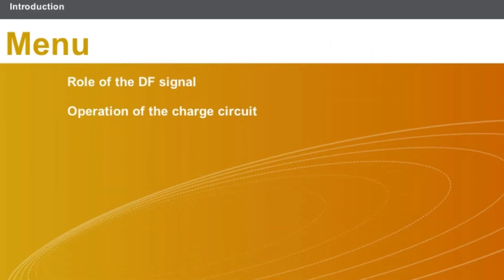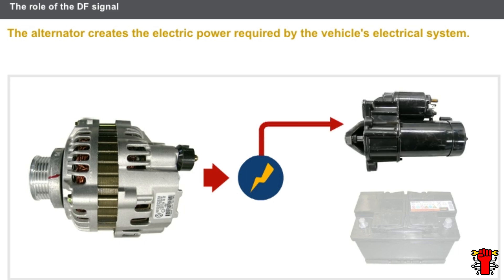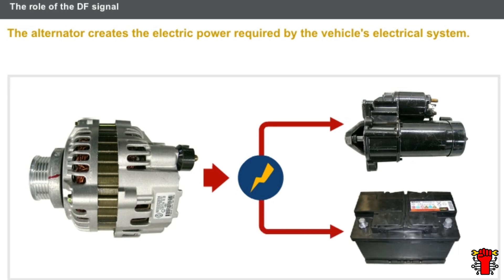This lesson will cover the following topics: the role of the DF signal and the operation of the charge circuit. The alternator creates the electric power required by the vehicle's electrical system. This power is used for powering all the vehicle's electrical consumers and maintaining the battery in satisfactory charge condition.